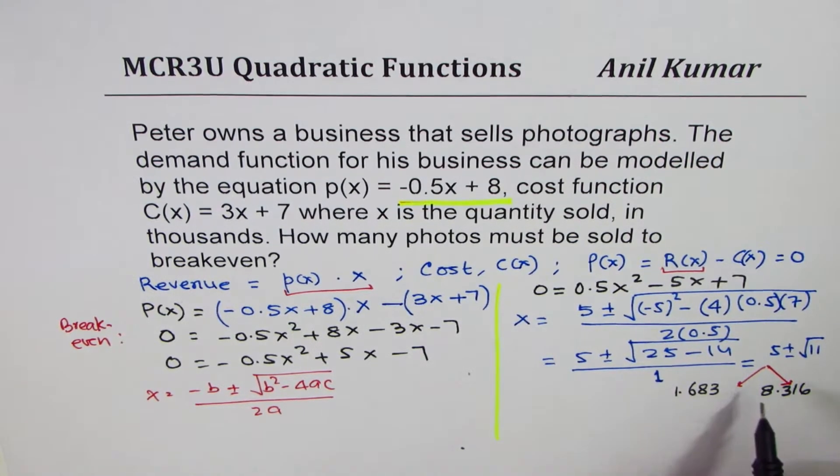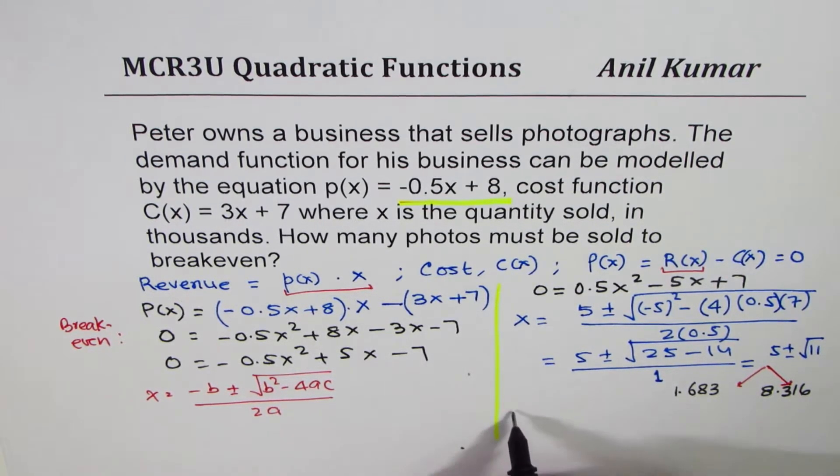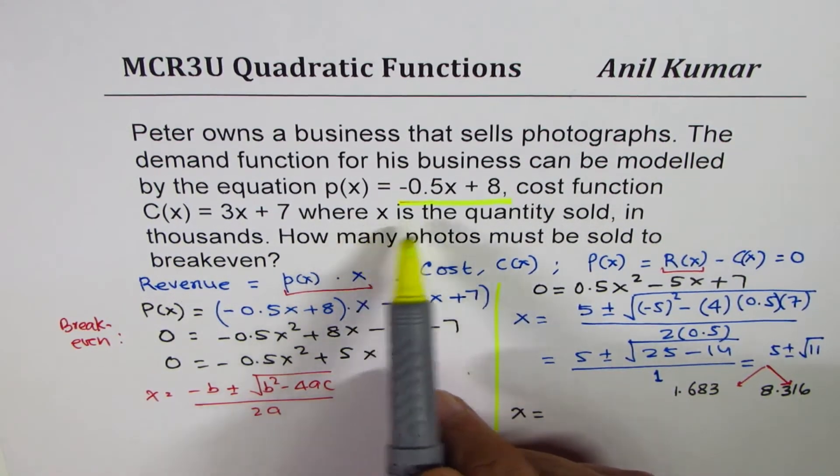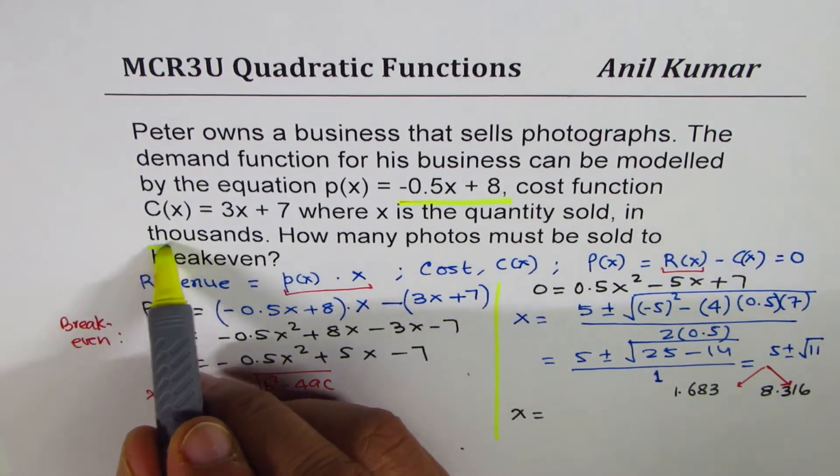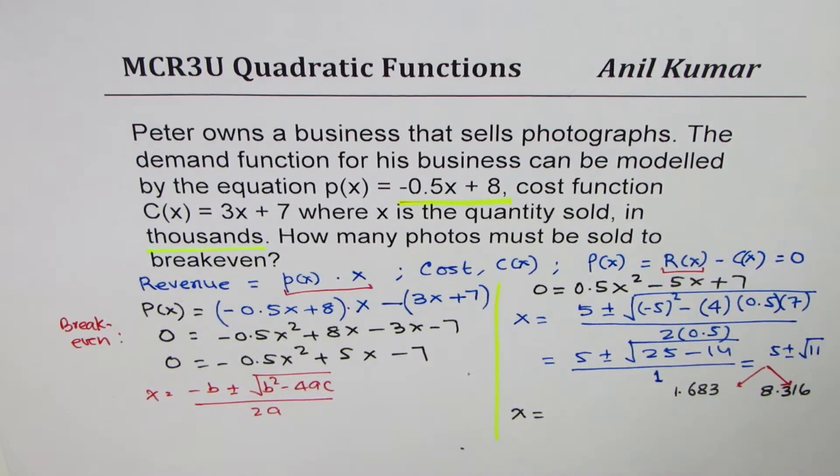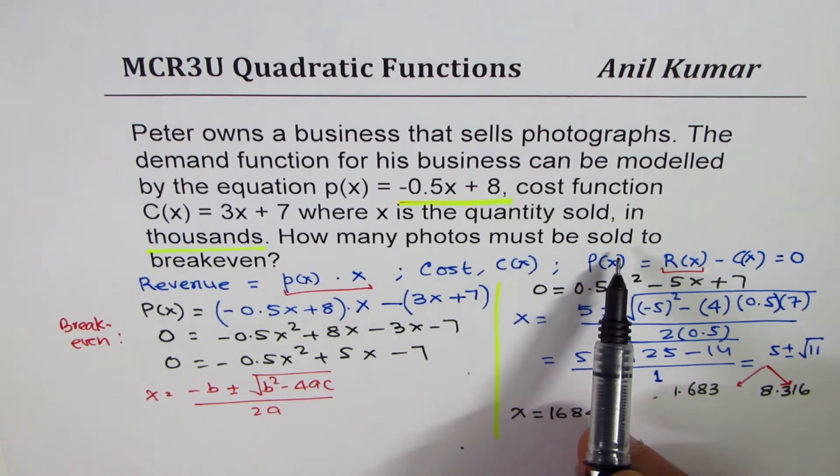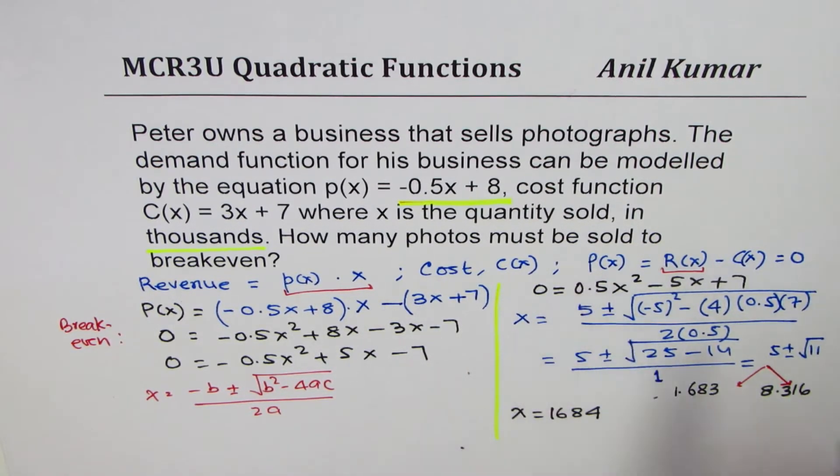It's no problem. So we're looking forward to the lowest value, which can satisfy your condition. So we can see x will be equal to, remember, x is the quantity sold in thousands. So it is 1.683 thousand. So we could say the quantity to be sold is 1,684. So that is the minimum quantity to be sold when the profit will be 0 or will reach a stage of break even.